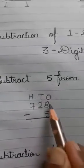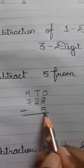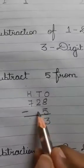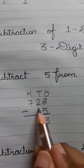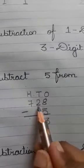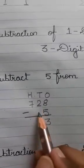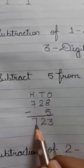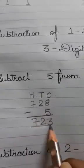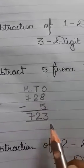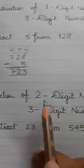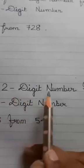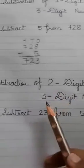Eight minus five equals three. There is no number in the tens or hundreds to subtract, so we write those same numbers. The answer is seven hundred twenty-three. In the same way, we do subtraction of a two-digit number from a three-digit number.